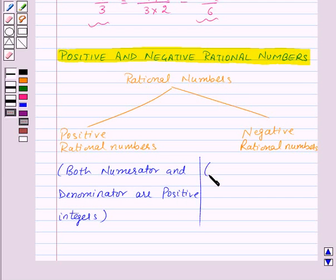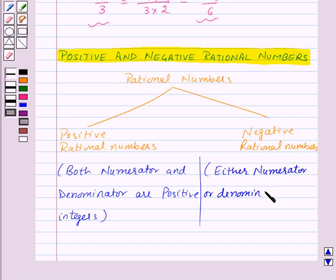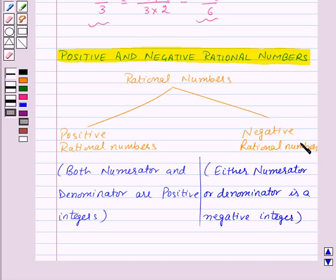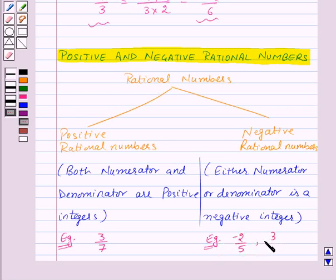Rational numbers in which either the numerator or denominator is a negative integer are called negative rational numbers. For example, 3 by 7 is a positive rational number, and minus 2 by 5 and 3 by minus 4 are negative rational numbers.